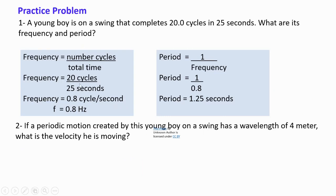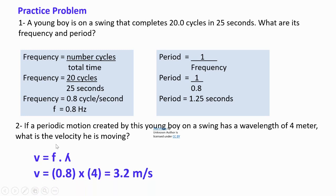Using the same previous example: if a periodic motion created by the young boy on a swing has a wavelength of 4 meters, what is the velocity? We use the speed of a wave formula — frequency times wavelength. The frequency is 0.8 hertz, times 4 meters, which gives 3.2 meters per second.